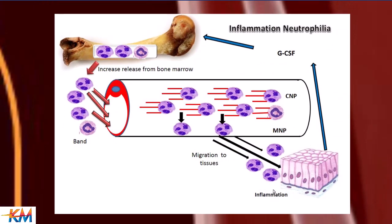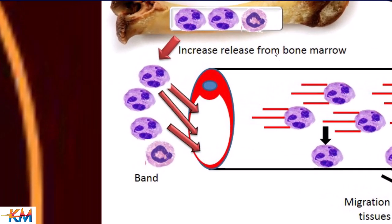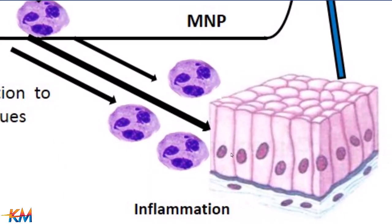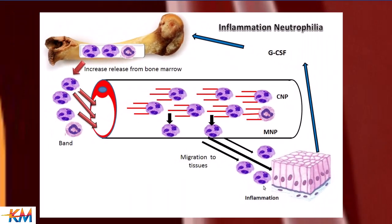Inflammatory neutrophilia occurs because infectious agents and inflammation increase cytokine secretion from T lymphocytes and macrophages present in large numbers at the inflammation site. Cytokines such as granulocyte colony-stimulating factor reach the bone marrow and increase formation and release of neutrophils. Due to increased regeneration, the bone marrow releases both mature and immature cells (band cells) into the bloodstream — producing a left shift. The degree of inflammation determines the amount of G-CSF released, which drives neutrophilia with left shift.